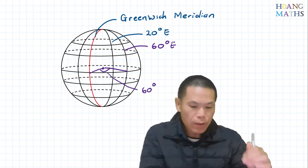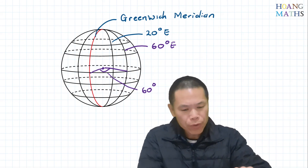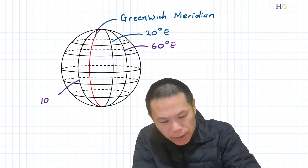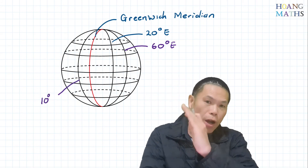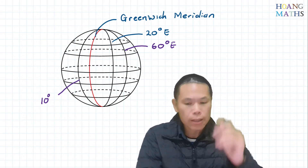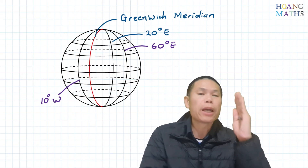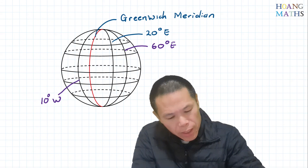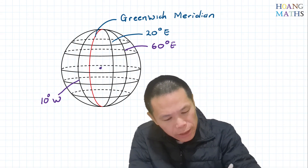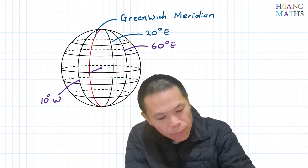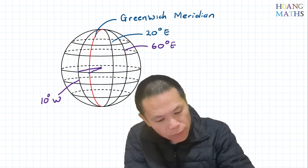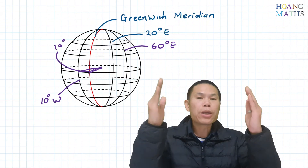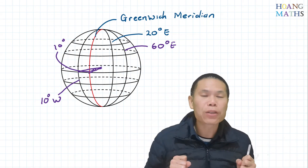Let's say this longitude here is 10 degrees — because it's on the left of the Greenwich meridian, it's 10 degrees west. That means it's 10 degrees west of the meridian. The angle from the Greenwich meridian to this line, at the center of the earth, is 10 degrees. Thank you so much for watching — bye!